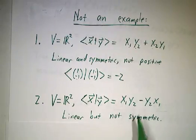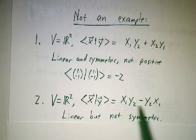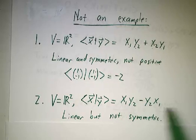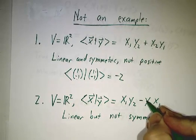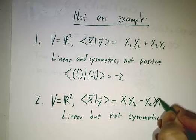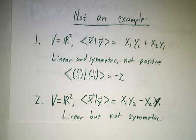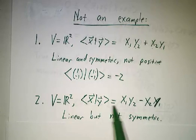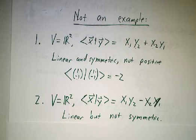And then you have expressions that you sometimes see, like x₁y₂ minus y₂x₁ minus x₂y₁. And that is linear, but it's not symmetric. If you swap the roles of x and y, you get minus what you started.